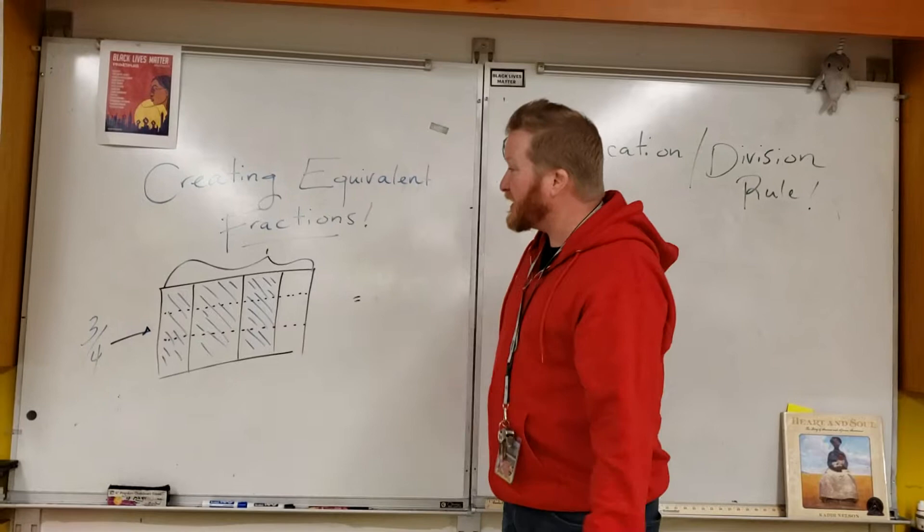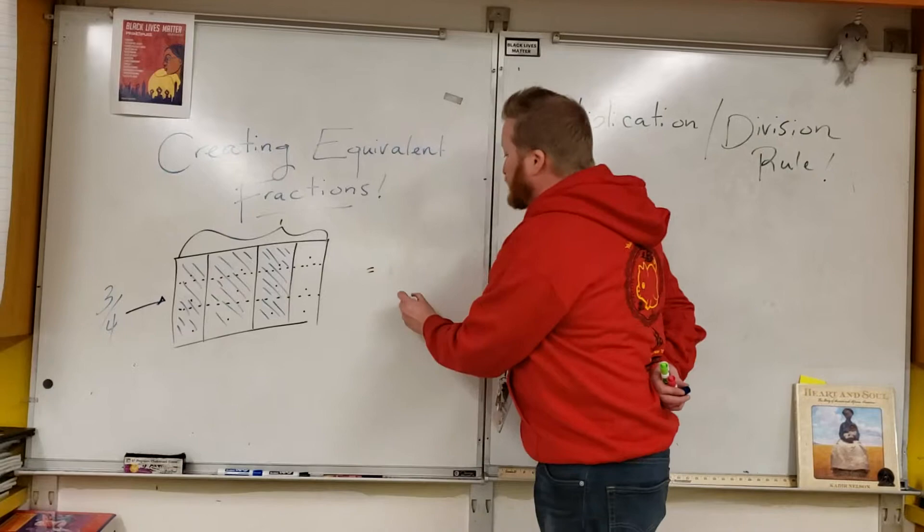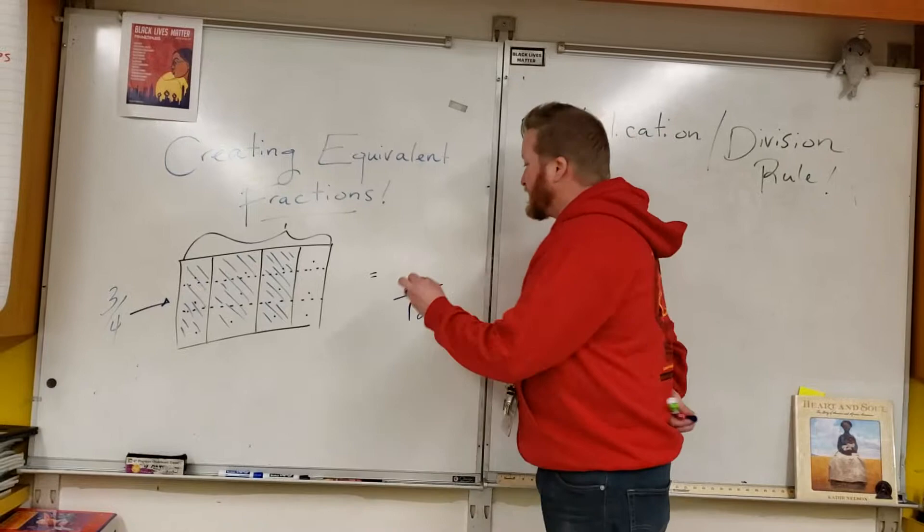I end up with one, two, three, four, five, six, seven, eight, nine, ten, eleven, twelve parts of which, how many of them are shaded, Quincy? Nine. Nine.